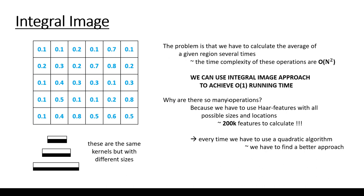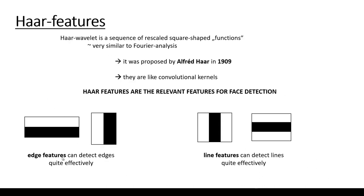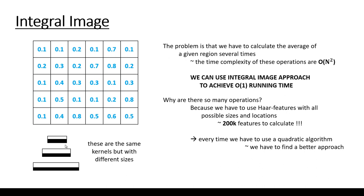You may ask why there are so many operations — because we have to use Haar features with all possible sizes and locations. We have been talking about the edge feature and the line feature, but we have to use lots of variations of these features. The size of these kernels may differ — the same line feature can appear in different sizes. That's why there are so many operations, because the Viola-Jones algorithm uses many kernels, and the number of features can be as high as 200,000. Every time we have to use a quadratic algorithm, so this is why we need a more optimal approach — and this is why the integral image approach came to be.